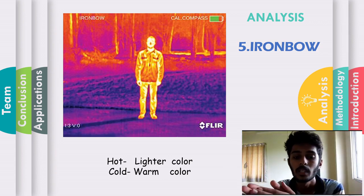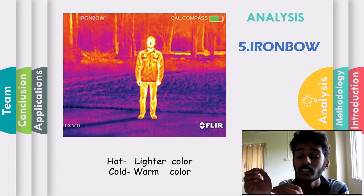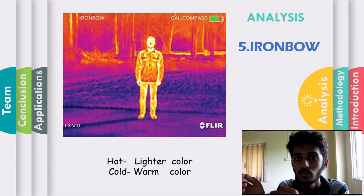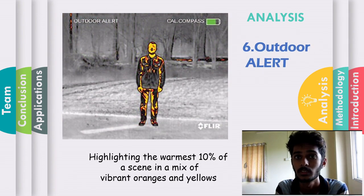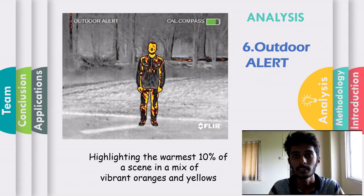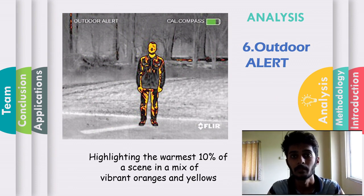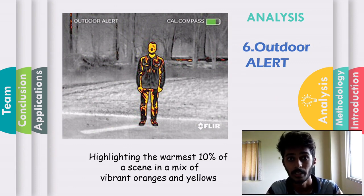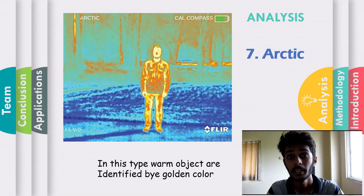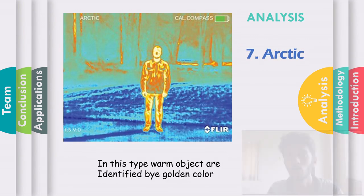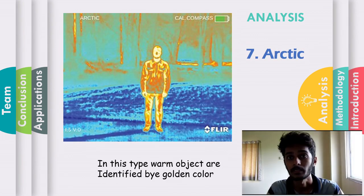The outdoor type is usually used for detecting objects. The last type is arctic: in this type, warm objects and warm surroundings are identified by a golden color.